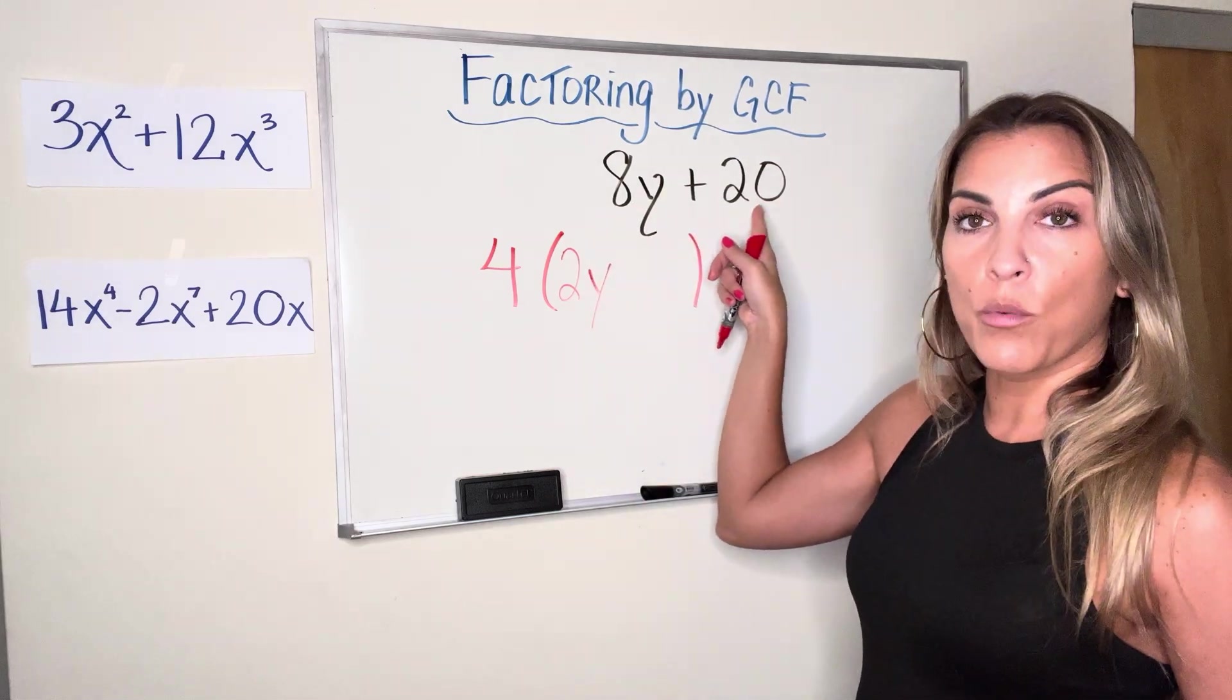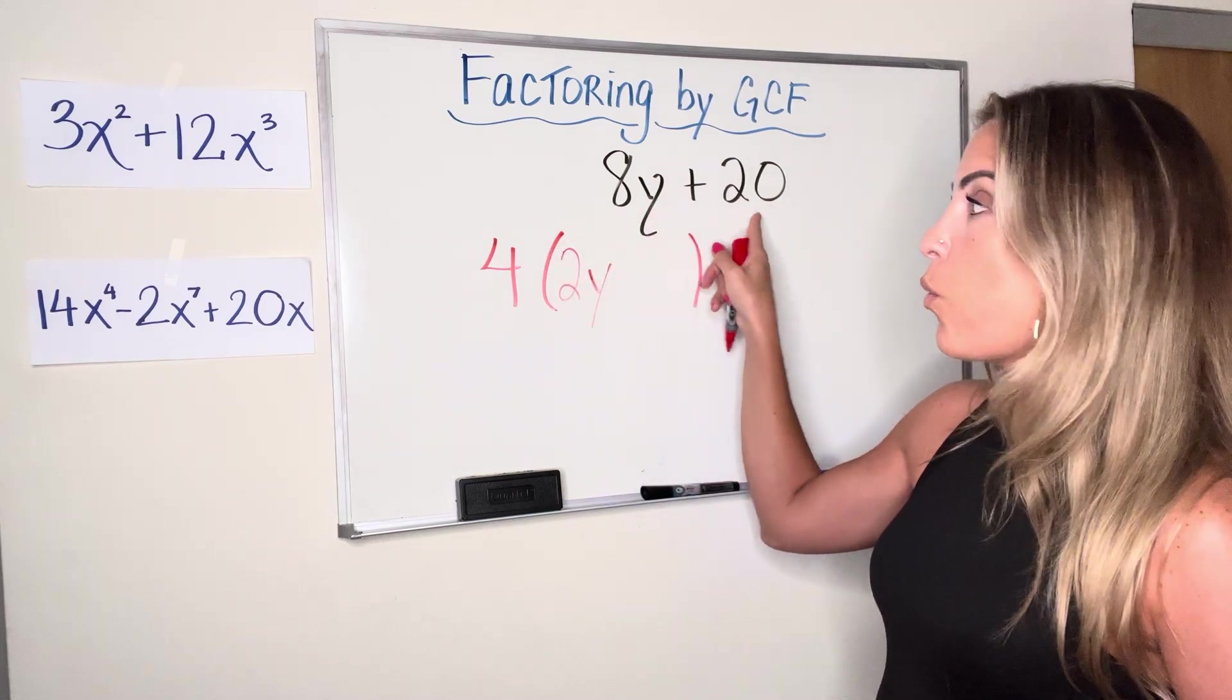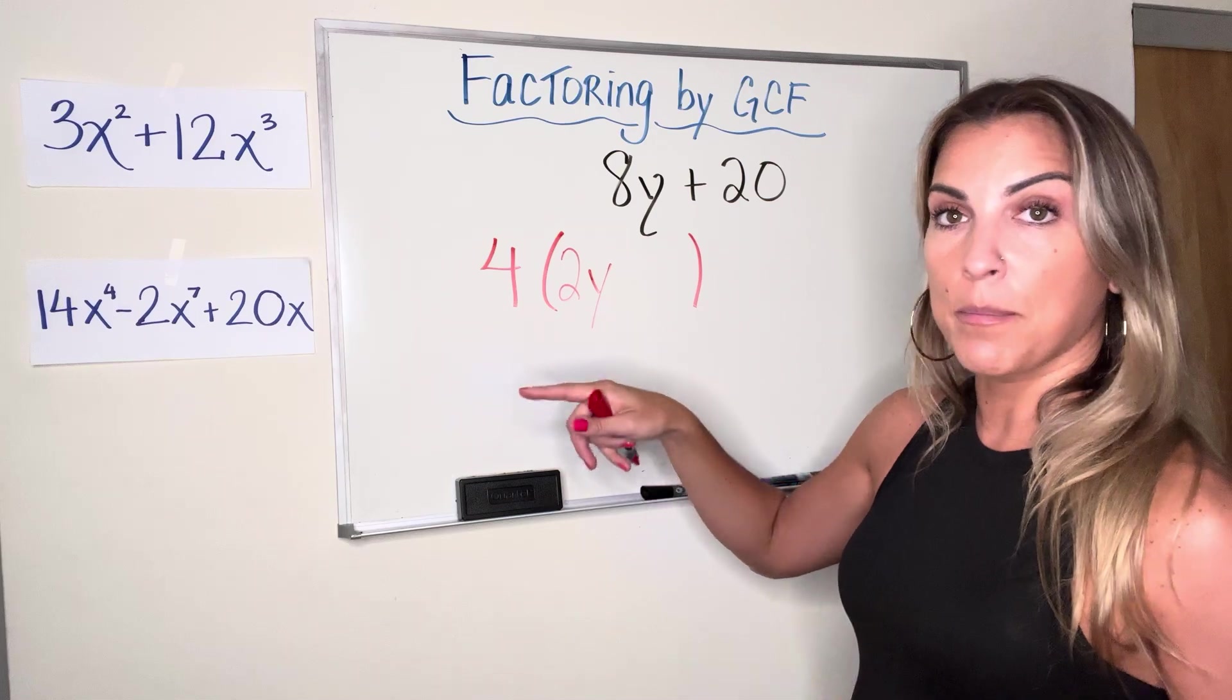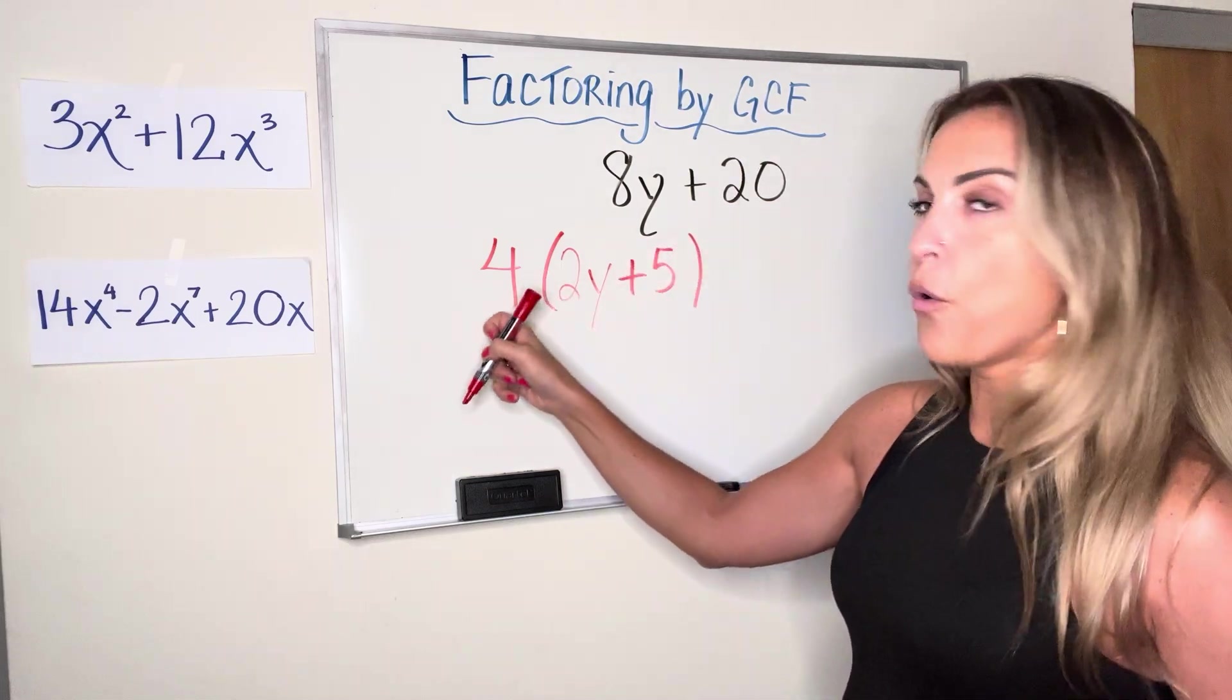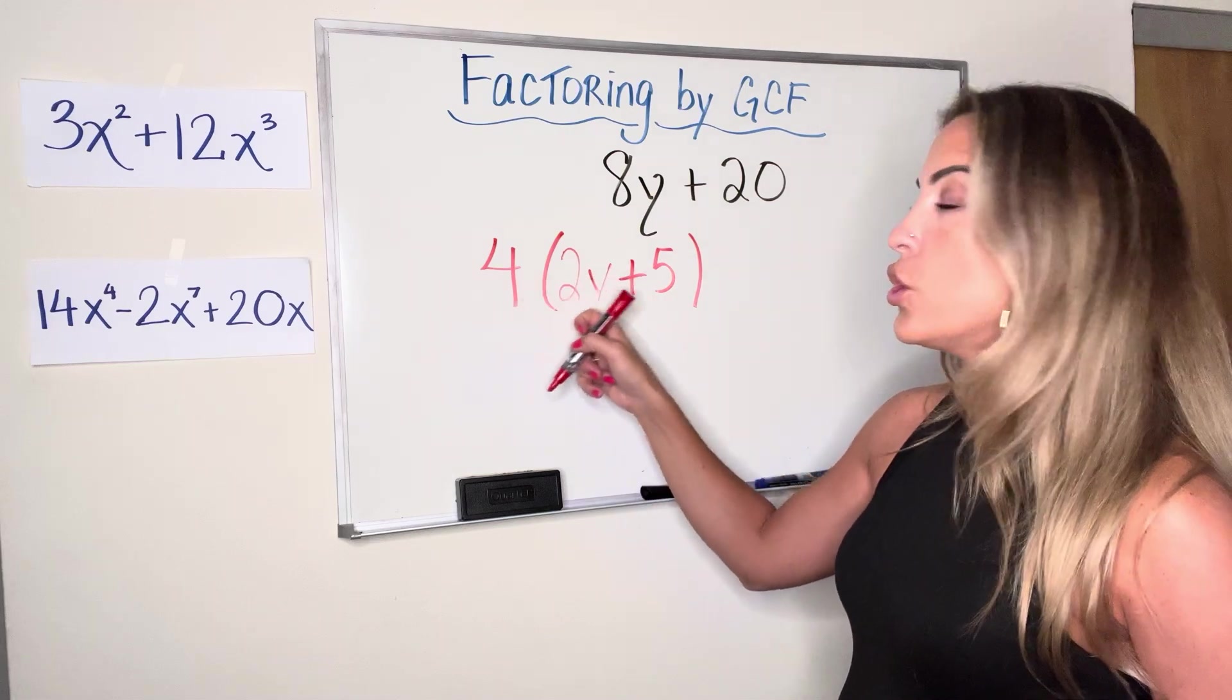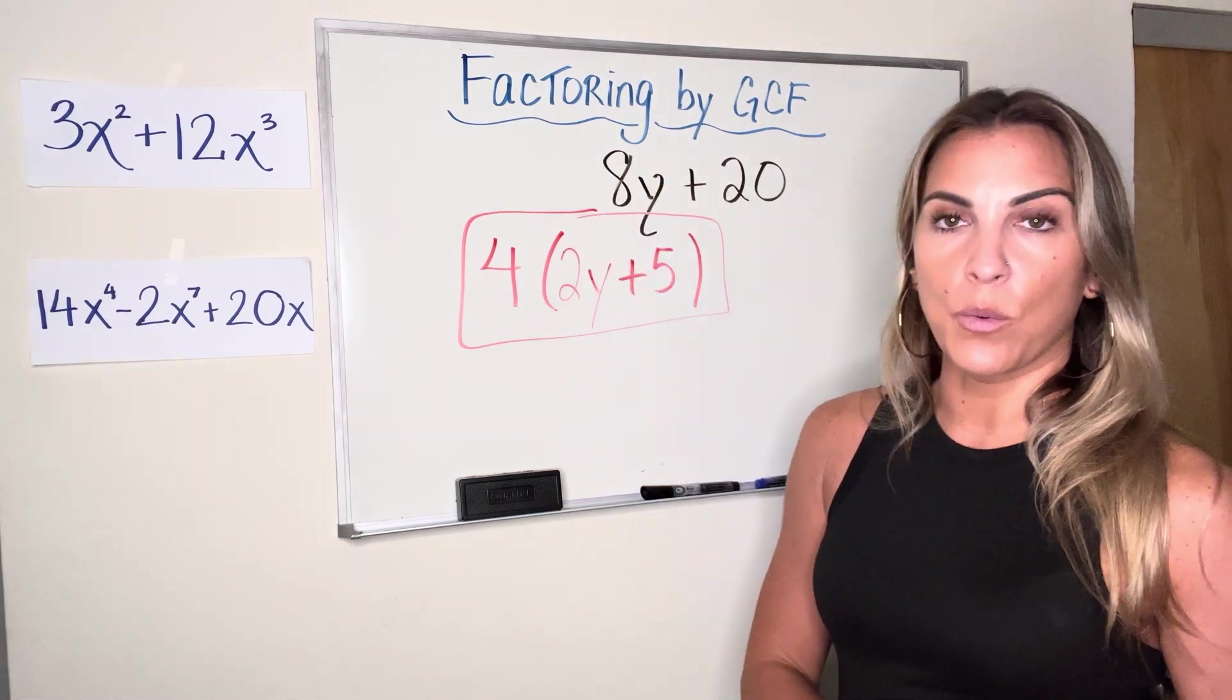Second term was 20. So again, we're dividing each of these terms by our greatest common factor. 20 divided by 4 is 5. It's a positive 5. So I'm going to write plus 5. So 4 is my first factor. 2y plus 5 is my second factor. And I have factored the expression 8y plus 20.